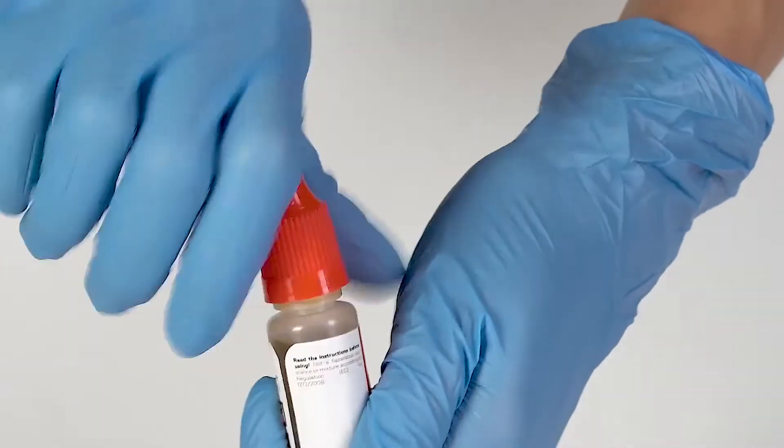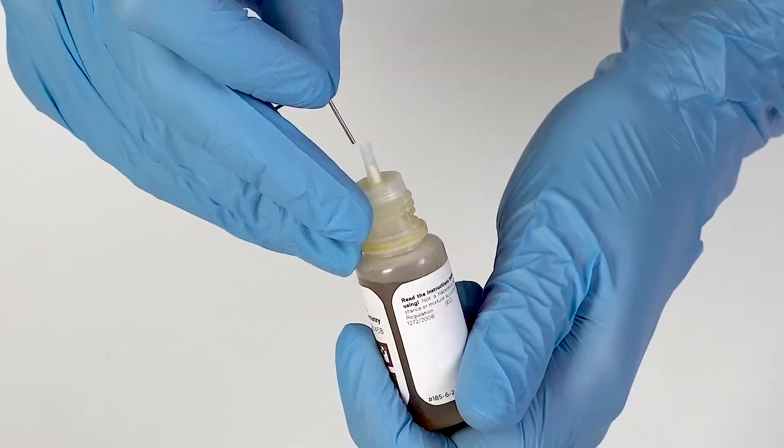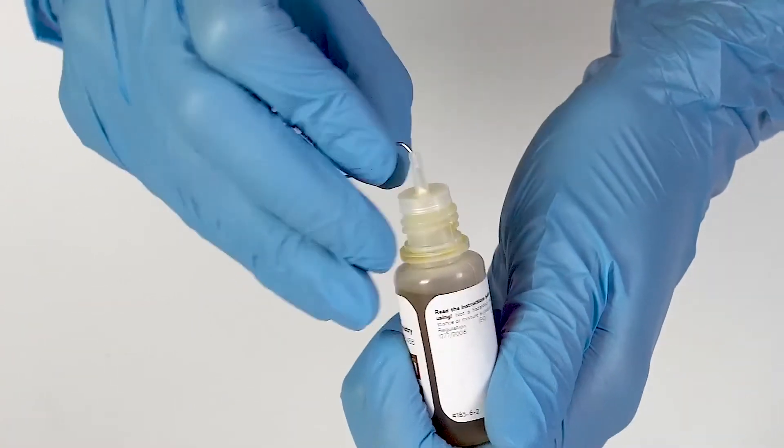To open a bottle containing a reagent, push the cap down and turn it. Pierce the bottle nozzle with an unbent paper clip.